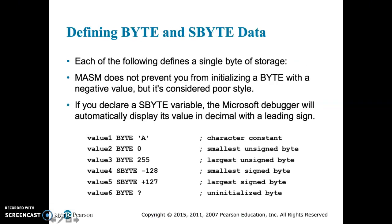In terms of defining bytes and sbytes, here's a few examples. If we include a character with quotes or double quotes around it, it's defined as a character. You know, behind the scenes we know that the capital A is stored in hexadecimal as the number 65, but it's a character constant.